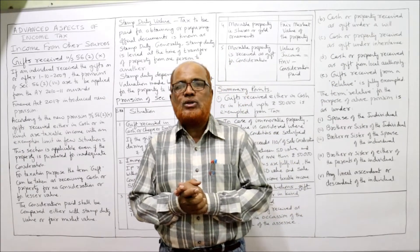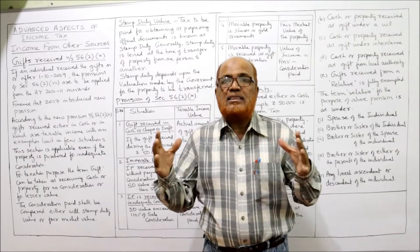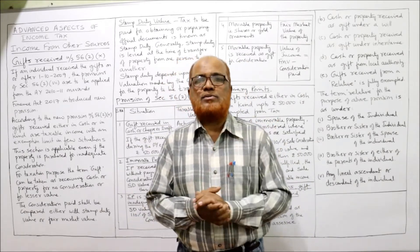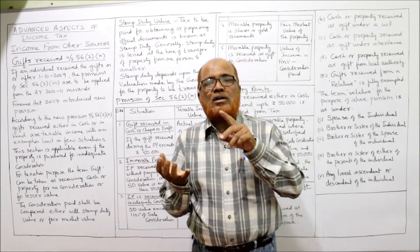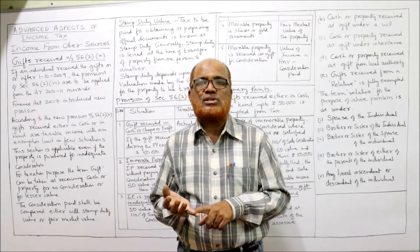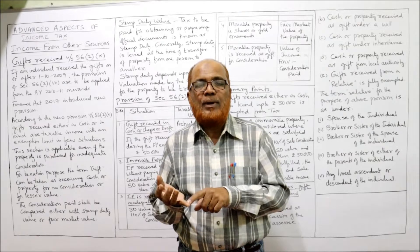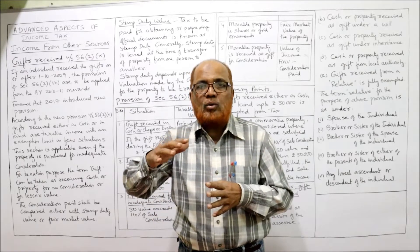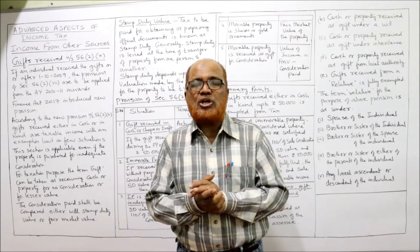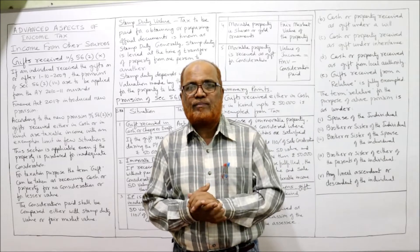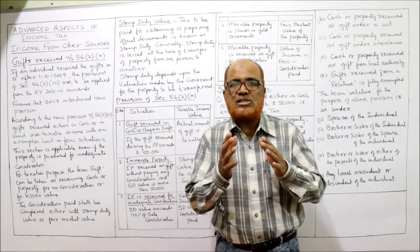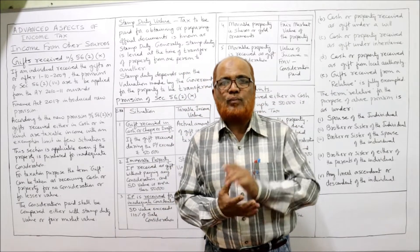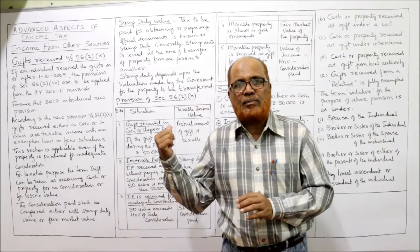Currently the topic going on is unit number 2, income from other sources. This is a very lengthy unit, because until and unless the student is clear on the provisions, he should not go to solve the problems. In the last videos I have explained what are the items that come under income from other sources — provisions regarding dividend income, interest on securities, casual income, letting out of plant, machinery, furniture, family pension. If you have not watched those videos, I suggest you go to the playlist of my channel, select the subject Advanced Aspect of Income Tax, unit number 2, watch the starting videos, then you can understand this video.